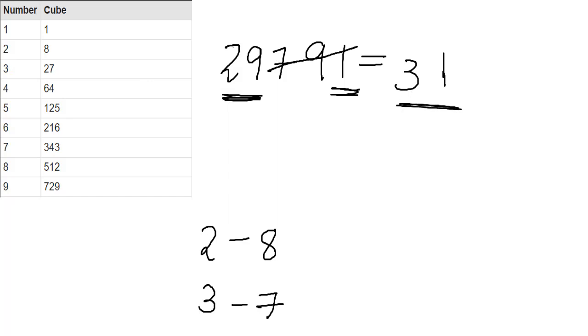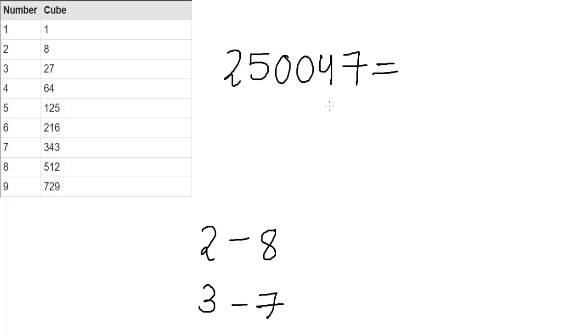Let's look at one last example. Now suppose if you have to find the cube root of 250047, then as I said all you got to focus on is the unit's digit which is 7 here. And we saw here that 3 and 7 form a pair. So the cube root will have its unit's digit as 3.